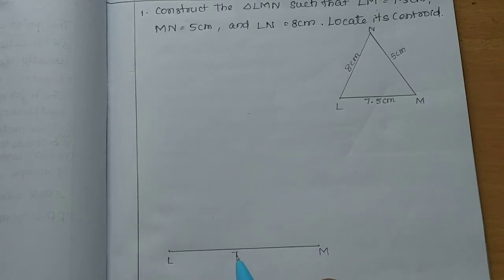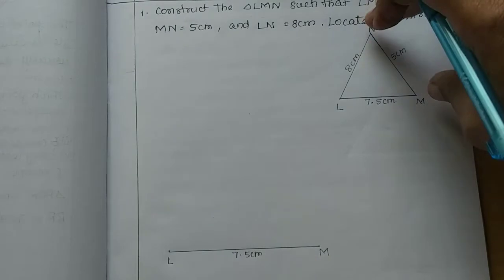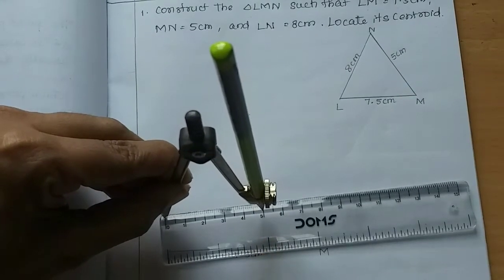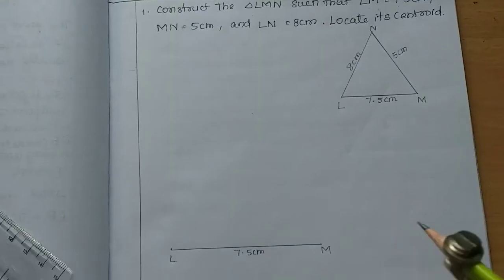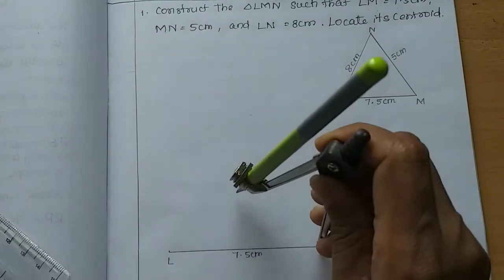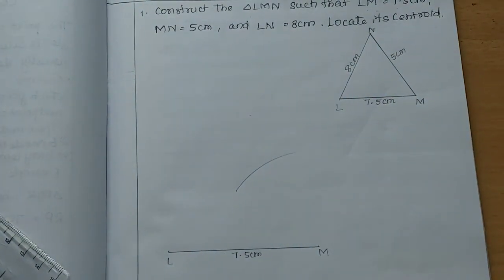The figure is correct. So 7.5 cm. That's why MN is 5 cm. So MN is 5 cm. Then M is 5 cm.